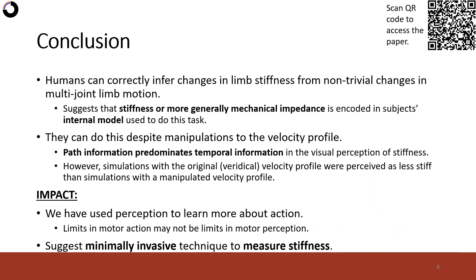To conclude, we showed that humans can correctly infer changes in limb stiffness from non-trivial changes in multi-joint limb motion. This suggests that stiffness, or more generally mechanical impedance, is encoded in subjects' internal model used to do this task. Moreover, subjects can do this despite manipulations to the velocity profile, suggesting that path information predominates temporal information in the visual perception of stiffness. However, simulations with the original natural velocity profile were perceived as less stiff than simulations with a manipulated velocity profile.